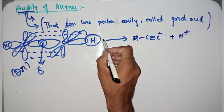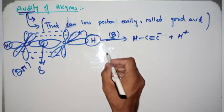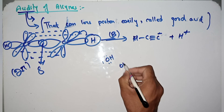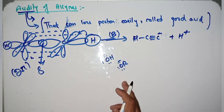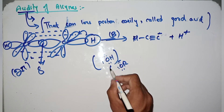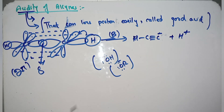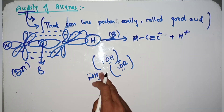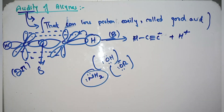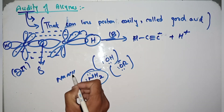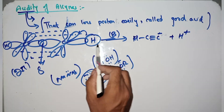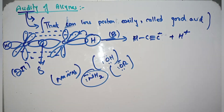When using a base, a hydroxide base or an alkoxide base is not strong enough to extract the proton from acetylene. We need a very strong base like NH₂⁻ (NaNH₂). NaNH₂ is a very strong base. When we use NaNH₂ in solution, it acts as a very strong base — NH₂⁻ can abstract this proton from the alkyne and make it acidic.